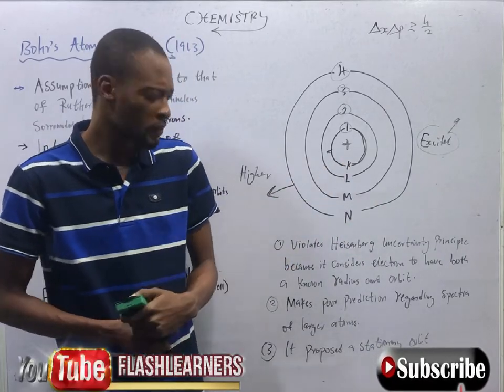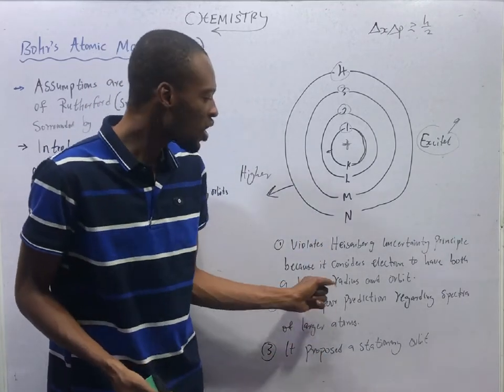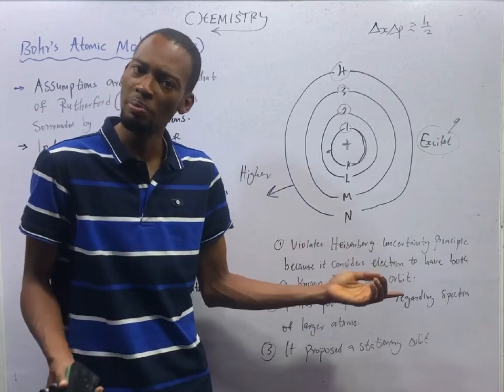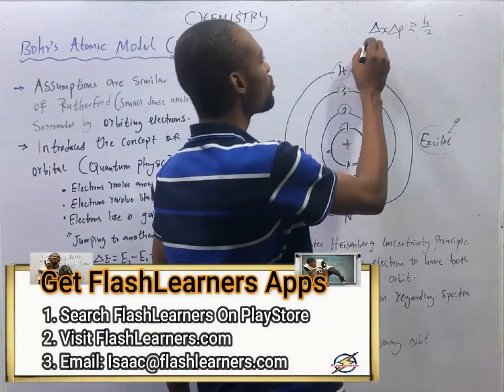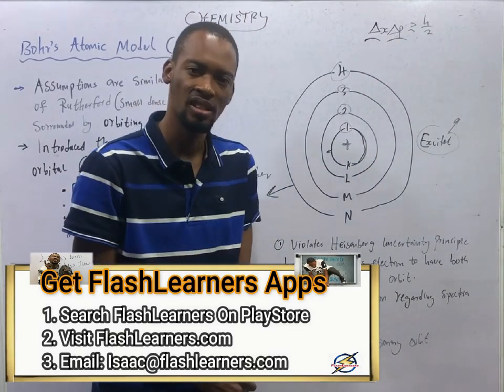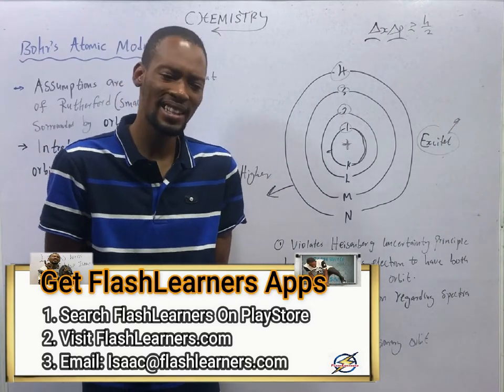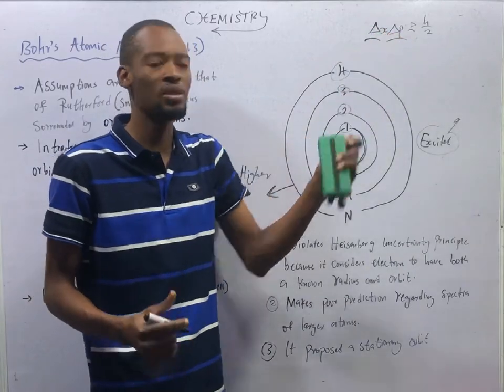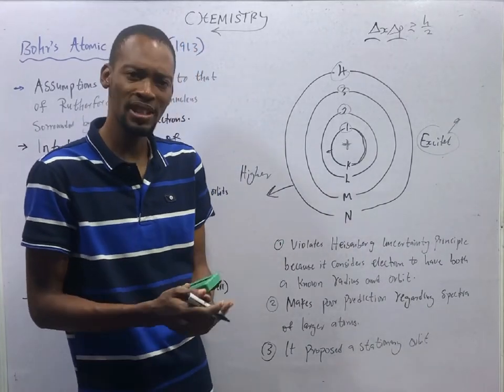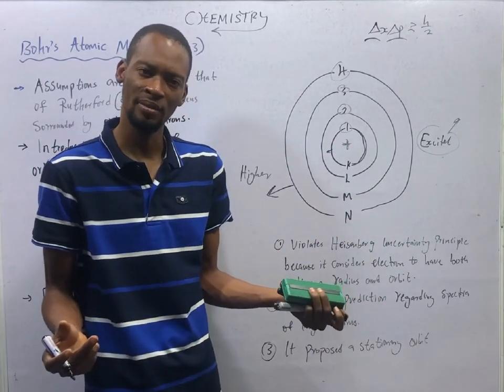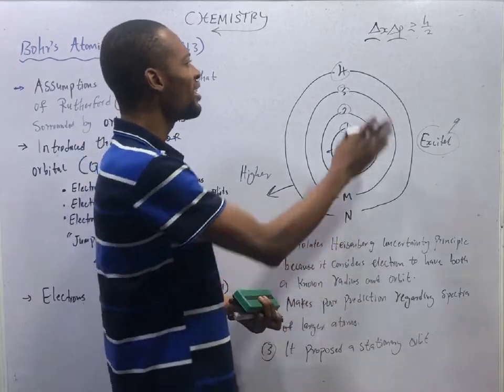But Bohr had some issues. The first one was he violated Heisenberg's uncertainty principle because it considers electrons to have both known radius and orbit. Meanwhile, Heisenberg stated that there is always an uncertainty when you make attempts to calculate the position or momentum of an object. You cannot measure both momentum and position precisely. The more you measure one, the less you are good at the other. Change in position times change in momentum is greater than or equals Planck's constant over 2 from the Heisenberg's uncertainty principle.